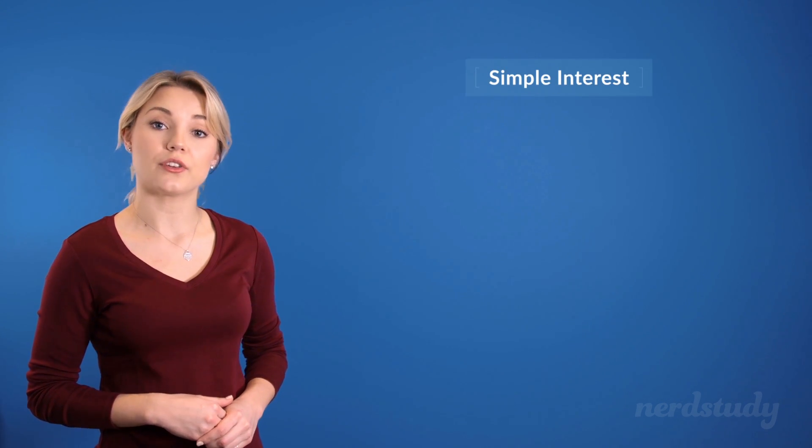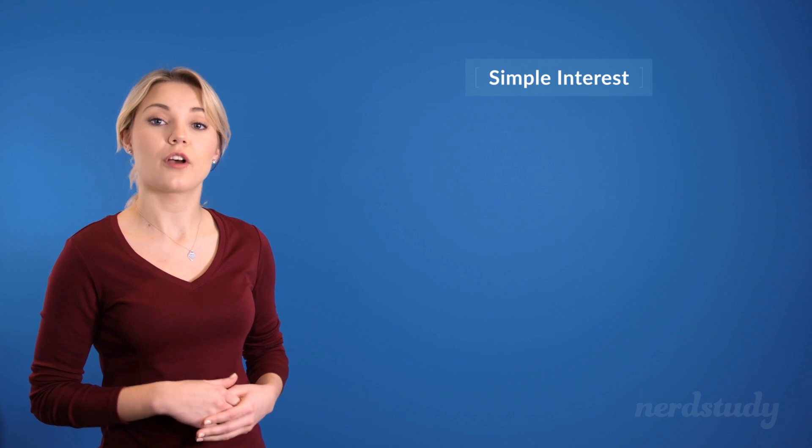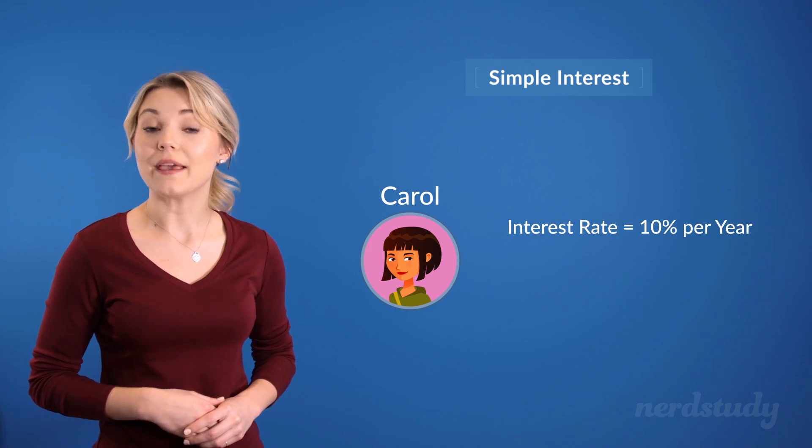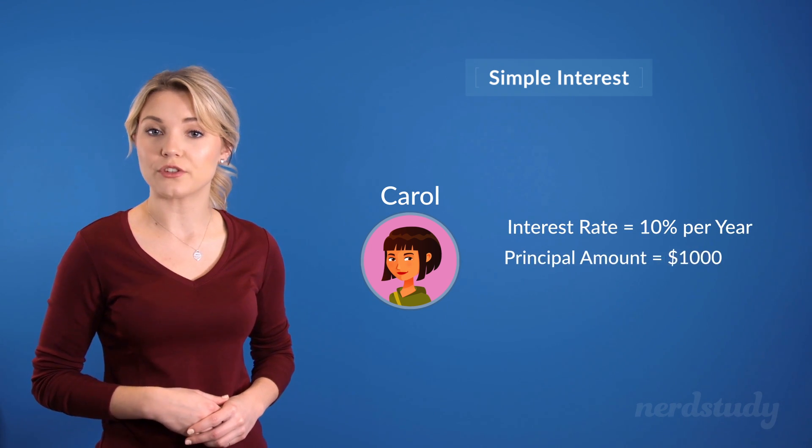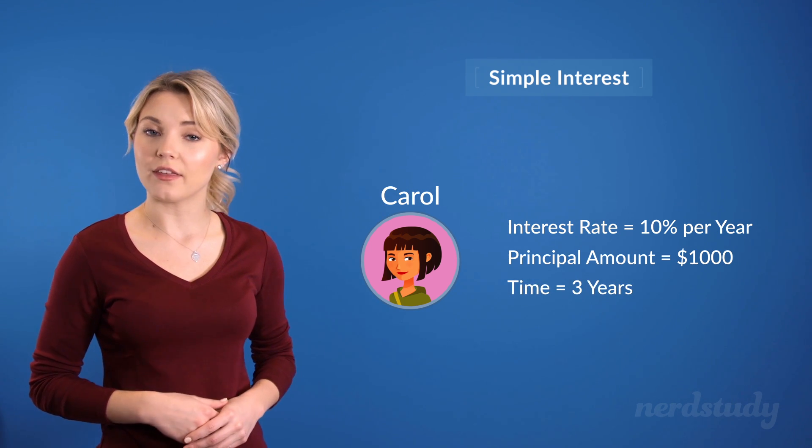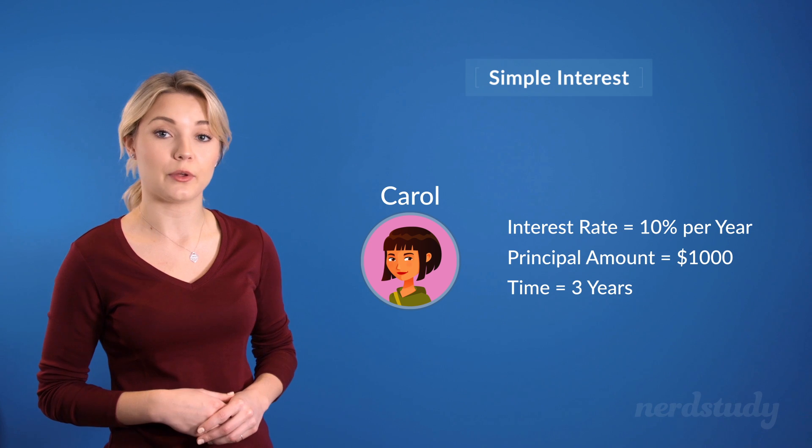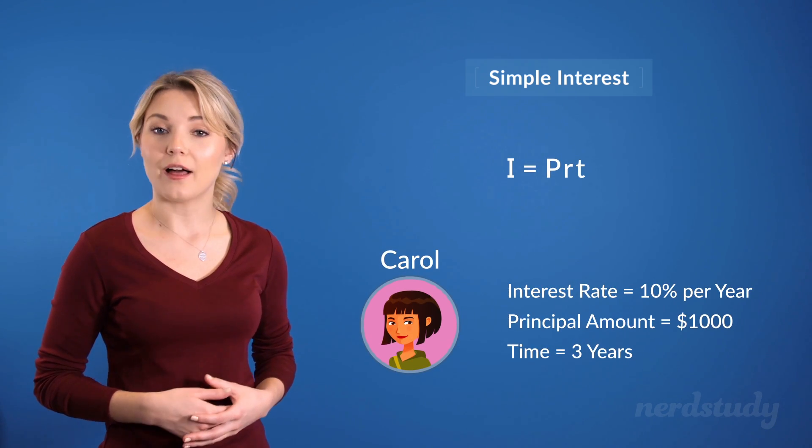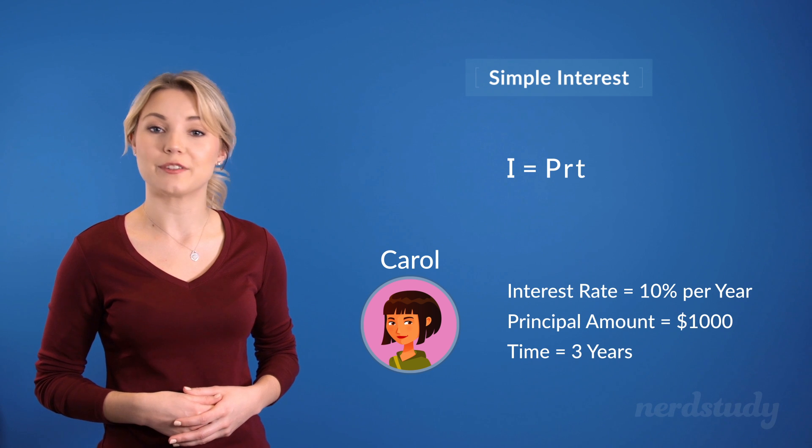Let's start off this lesson with an example of simple interest first, and then of compound interest so we can compare the two. Let's say Carol invests into a simple interest that makes 10% of a $1,000 investment every year for three years. To calculate how much she actually makes in simple interest alone, we can just pull up our formula here and plug in the following values into their respective variables.